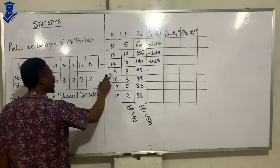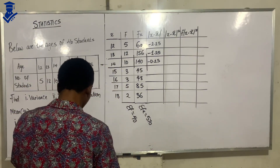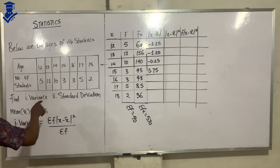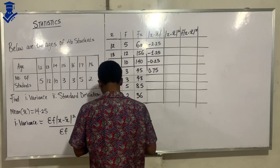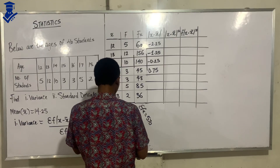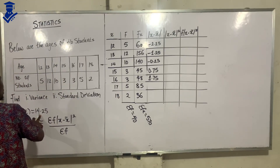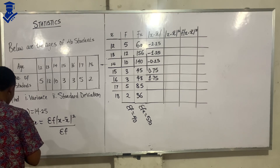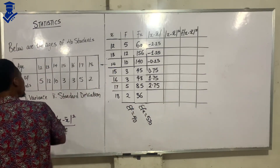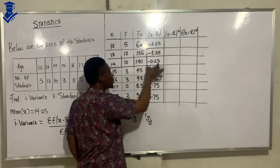Continuing x minus x̄: 15 minus 14.25 gives 0.75. Then 16 minus 14.25 gives 1.75. Next, 17 minus 14.25 gives 2.75. And 18 minus 14.25 gives 3.75. So for the x minus x̄ column, those are all the values we have.